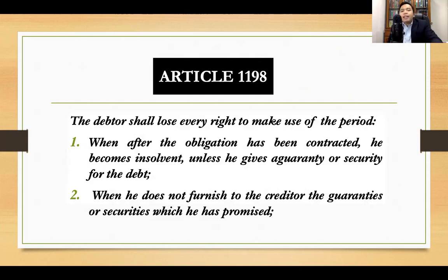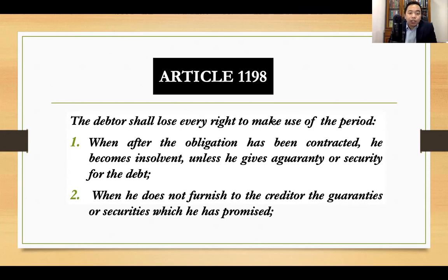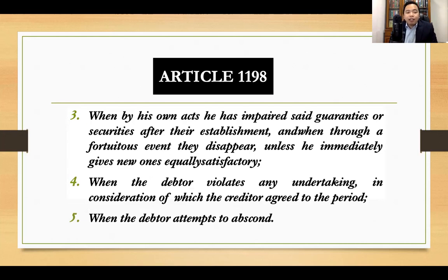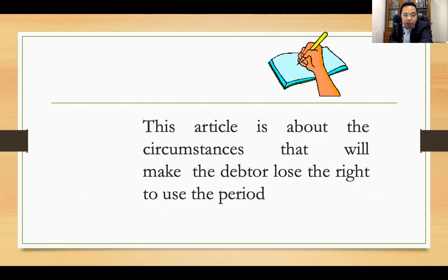Article 1198 gives you the instances when the debtor loses the right to make use of the period. The debtor shall lose every right to make use of the period: number one, when after the obligation has been contracted he becomes insolvent, unless he gives a guarantee or security for the debt; number two, when he does not furnish to the creditor the guarantees or securities which he has promised; third, when by his own acts he has impaired said guarantees or securities after their establishment, and when through a fortuitous event they disappear, unless he immediately gives a new one equally satisfactory; fourth, when the debtor violates any undertaking in consideration of which the creditor agreed to the period; and fifth, when the debtor attempts to abscond.